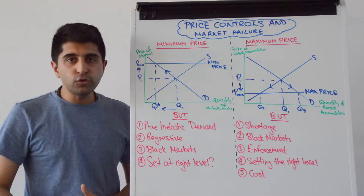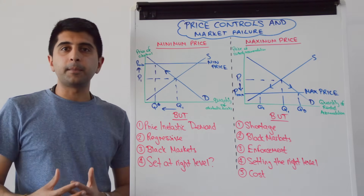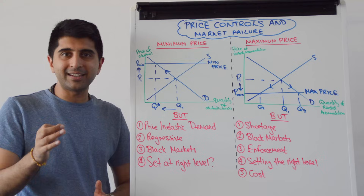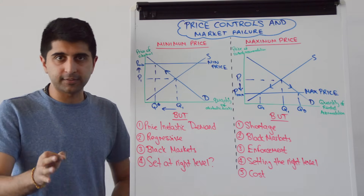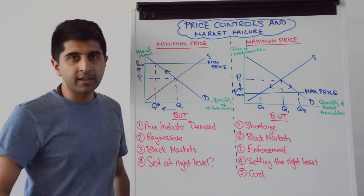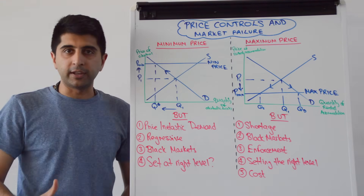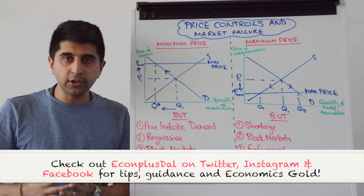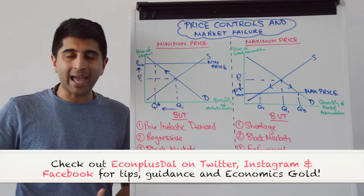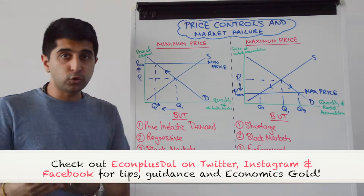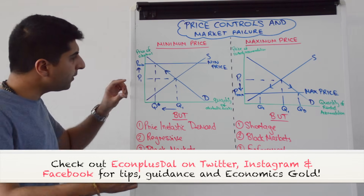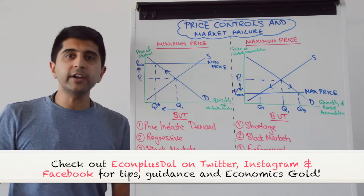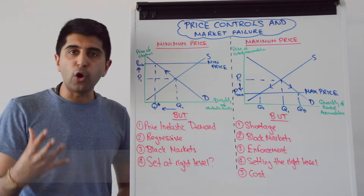A minimum price will be used to discourage the consumption of demerit goods, i.e. where there are negative externalities in consumption. Taking the context of alcoholic drinks: Scotland has imposed a minimum price on alcohol, and we see one in Canada as well — good context to apply here.